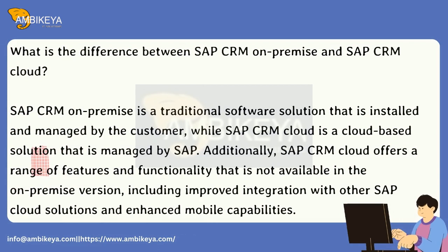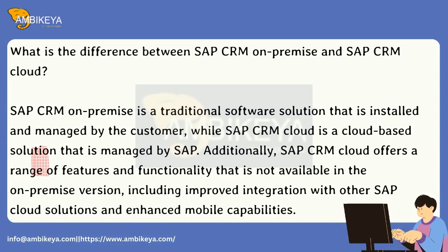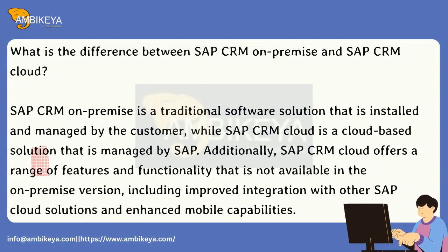What is the difference between SAP CRM on-premise and SAP CRM cloud? SAP CRM on-premise is a traditional software solution installed and managed by the customer, while SAP CRM cloud is a cloud-based solution managed by SAP. Additionally, SAP CRM cloud offers features and functionality not available in the on-premise version, including improved integration with other SAP cloud solutions and enhanced mobile capabilities.